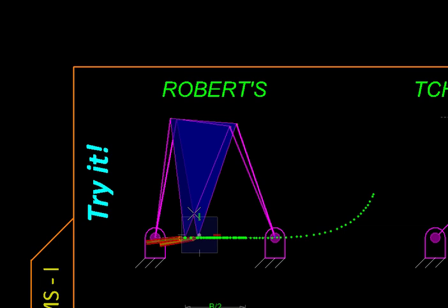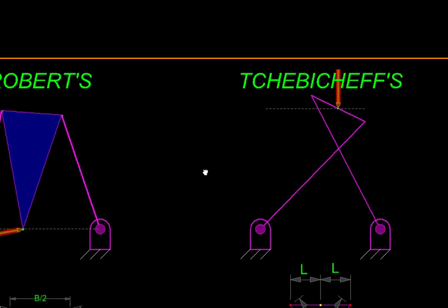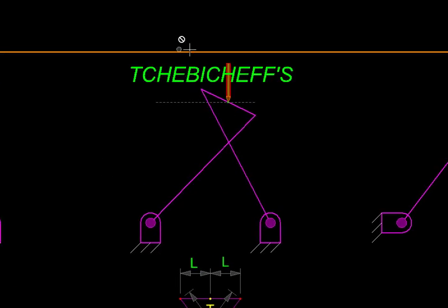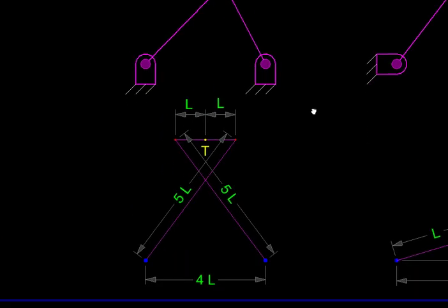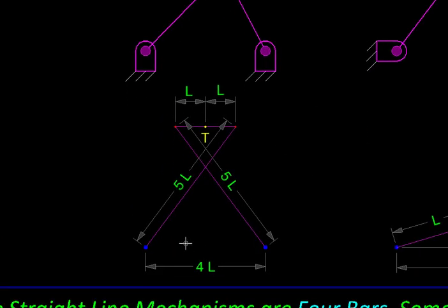Again it comes back to the approximate straight line. The next one was created by Chebyshev. Here are its proportions. So we have again a four bar, one, two, three and the fixed link four with the proportions 2L, 5L, 4L and 5L again. And at the midpoint of the coupler we have the tracer.